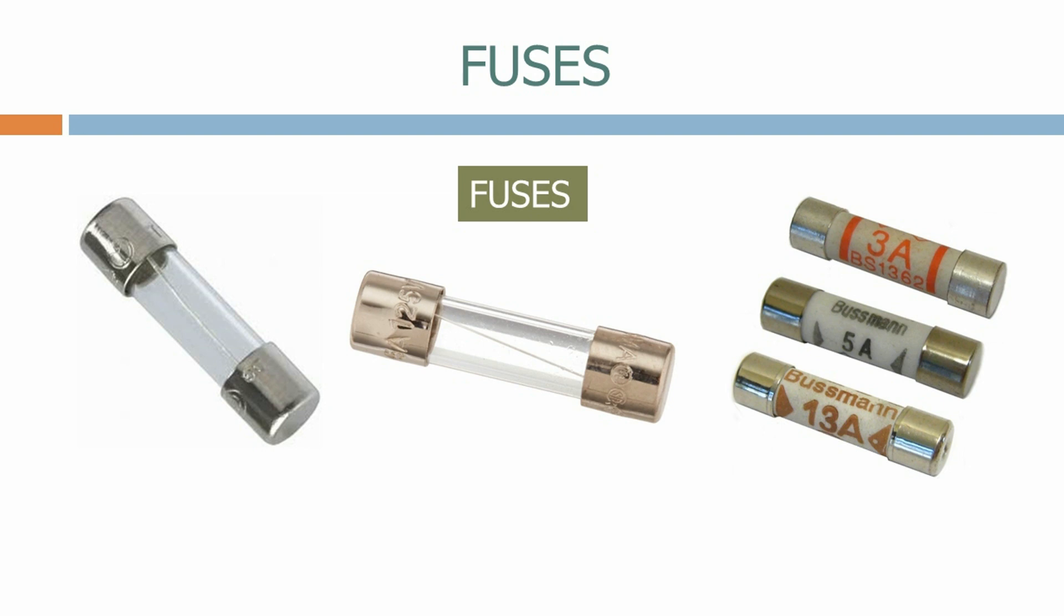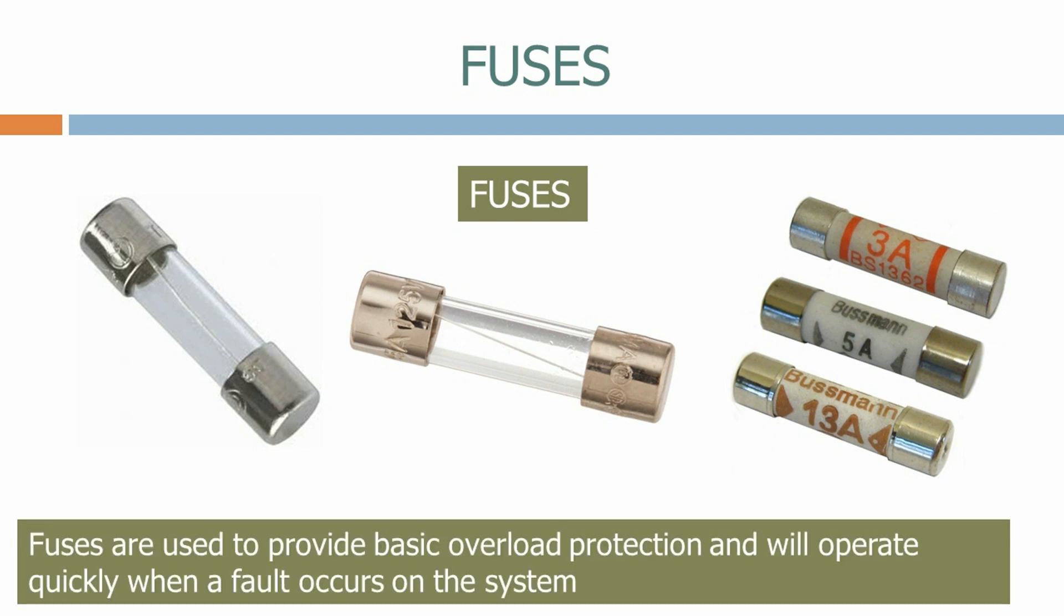We achieve different fuse ratings by changing the diameter of the wire inside the fuse. As the wire diameter increases, so does the fuse rating, as a larger diameter wire will melt at a higher current magnitude. Fuses are used to provide basic overload protection and will operate quickly when a fault occurs on the system.